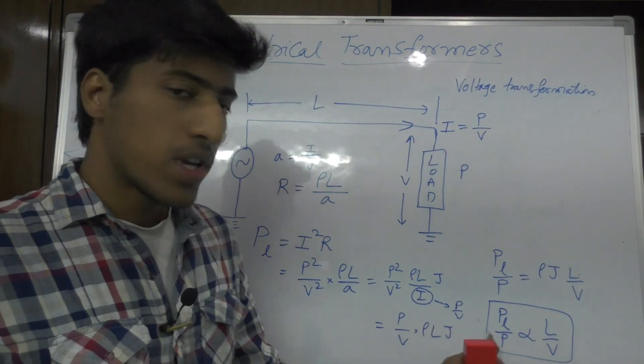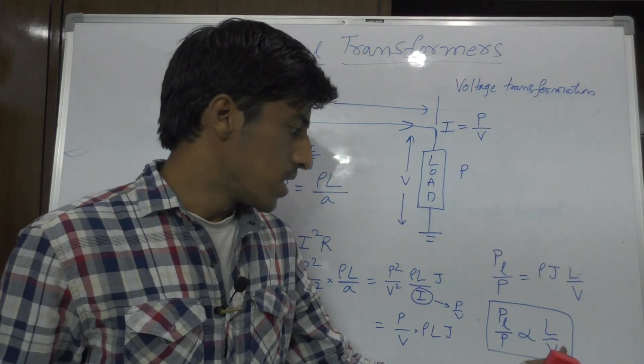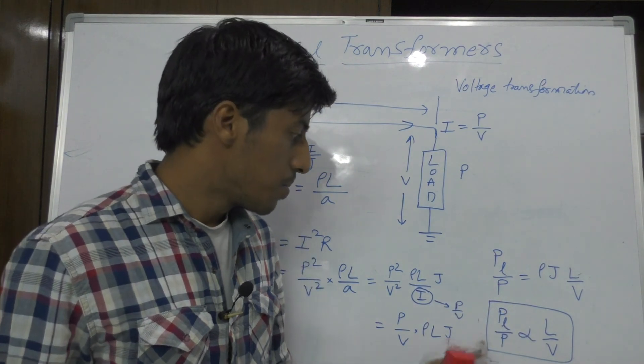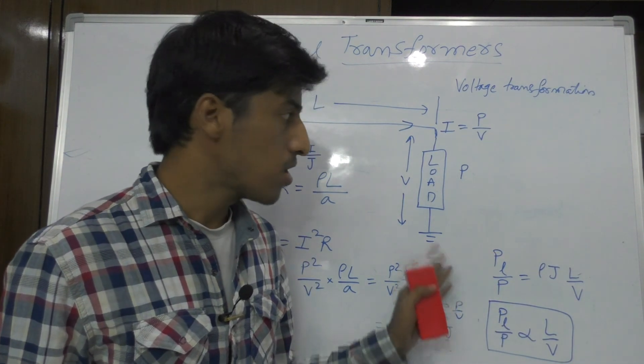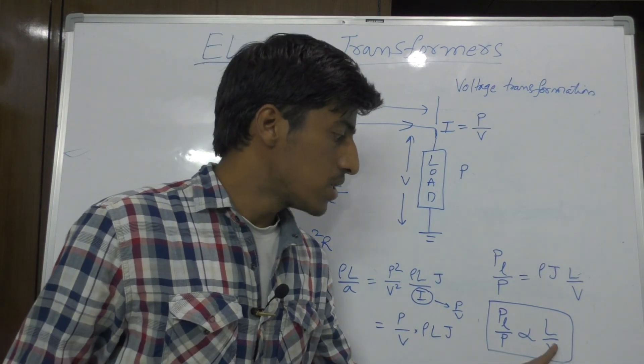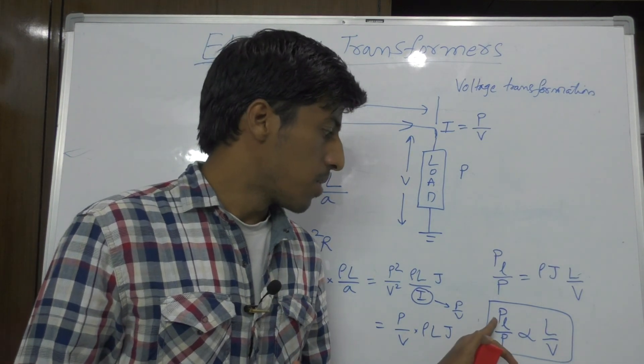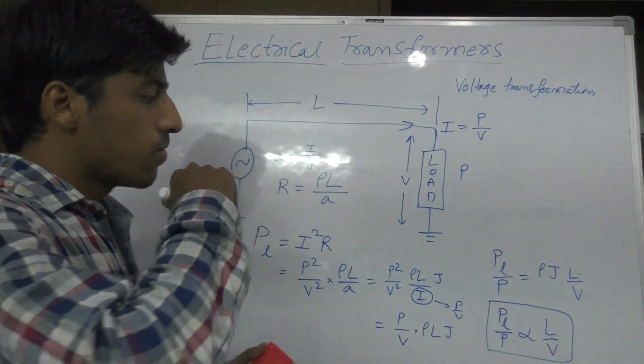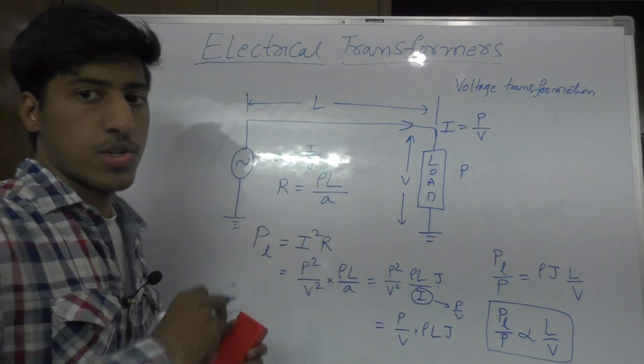From this we can conclude that the higher the voltage value, lesser will be the percentage power loss. PL by P is the percentage power loss in the transmission. So if the voltage value is more, the power loss will be less. That is why we will go for higher voltages while transmission.